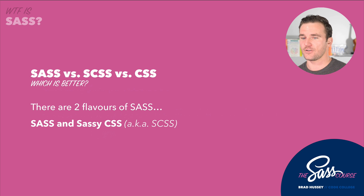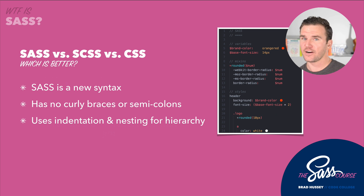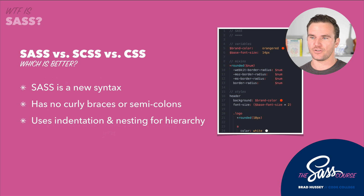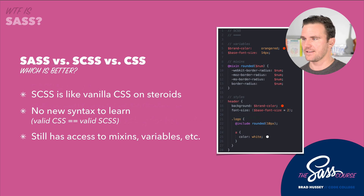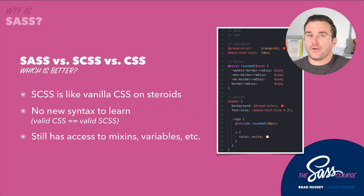SAS versus SCSS versus CSS — which is better? There are two flavors of SAS. One is SAS — Syntactically Awesome Style Sheets — which is a totally new syntax. It's very similar to CSS but new, with no curly braces or semicolons, and it uses indentation and nesting for hierarchy rather than long descendant selectors. The other is Sassy CSS, also known as SCSS, which is kind of like vanilla CSS on steroids. There's no new syntax to learn — valid CSS is valid SCSS. You could simply change the file extension to SCSS and there you go — you have Sassy CSS.